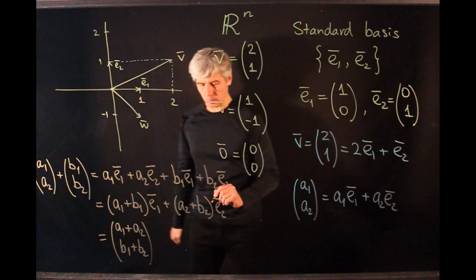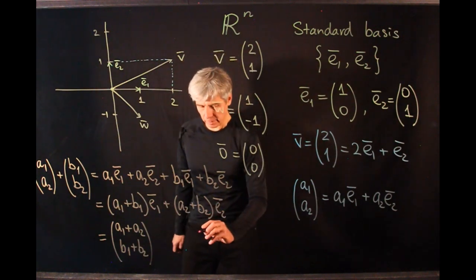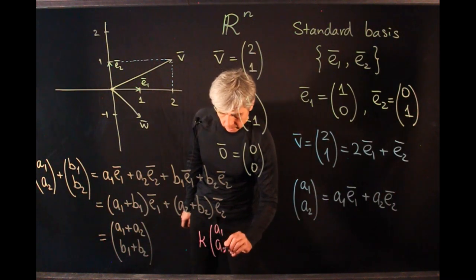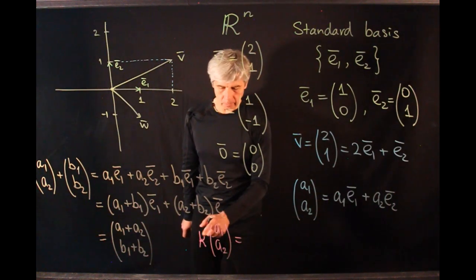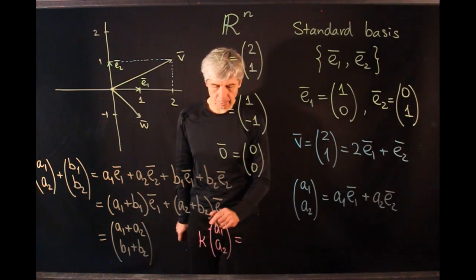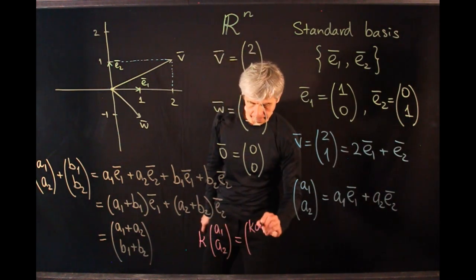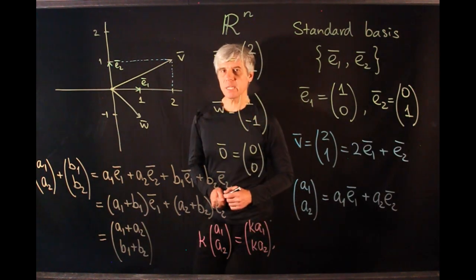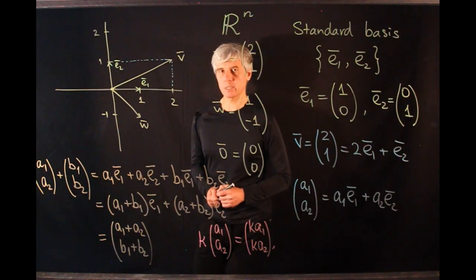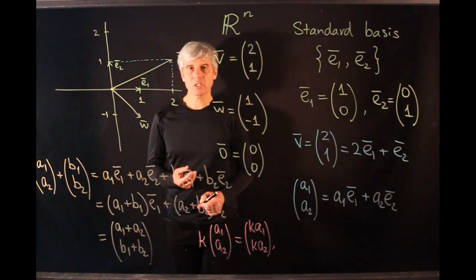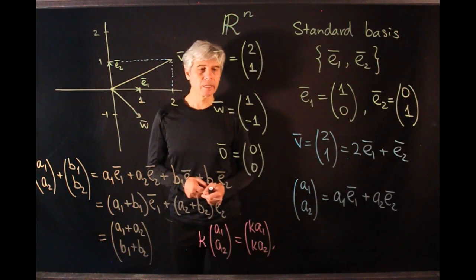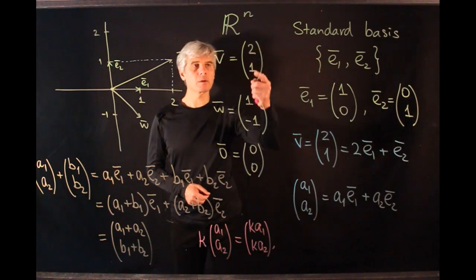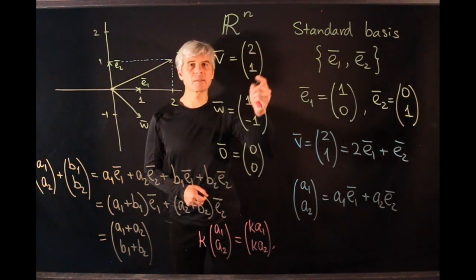The same principle applies to multiplication of vectors by scalars. If we have k times (A1, A2), then all we have to do is multiply each component of the vector by k. The same ideas apply also to three-dimensional space. In three-dimensional space we have three coordinate axes, and every vector is represented not as a pair but as a triple of real numbers.